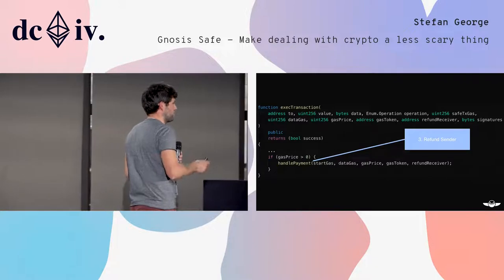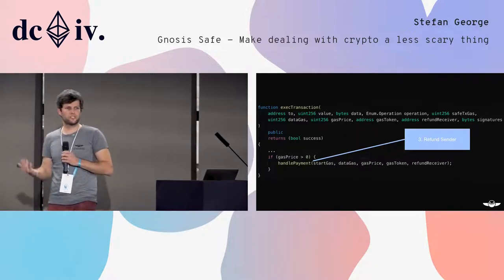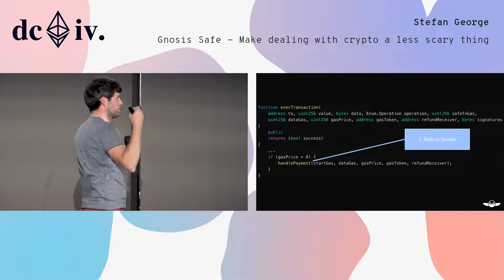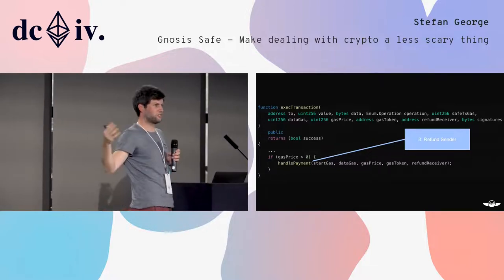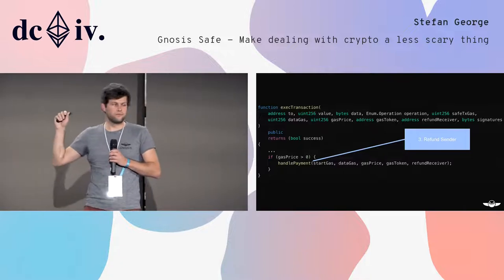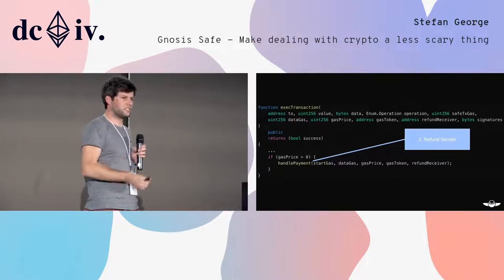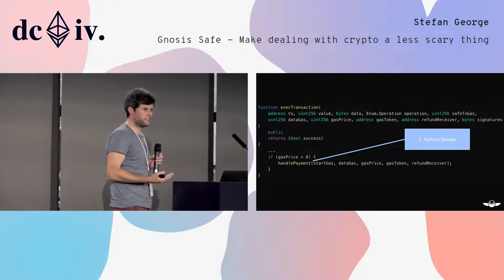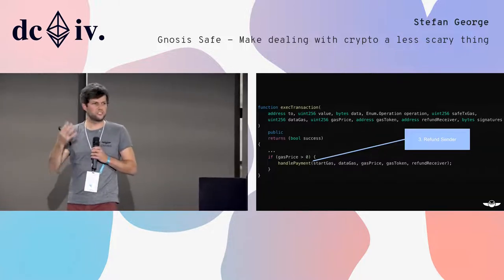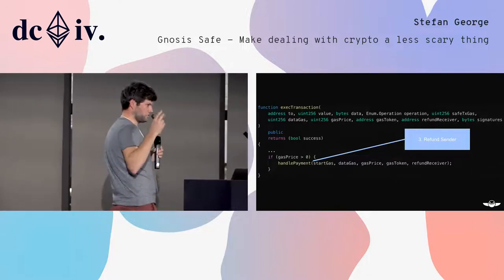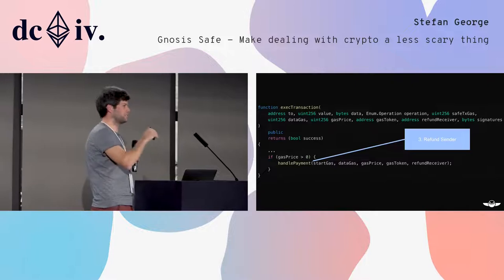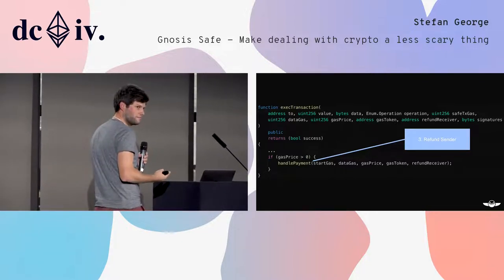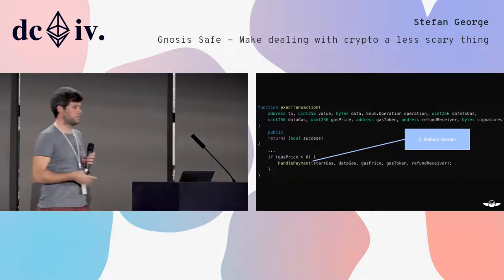Previously, when you had a multi-sig contract and owners had to sign and confirm transactions, they all had to be funded with Ether. Now, because we have meta transactions, you just collect those signed messages. But you still had to sign the Ethereum transaction, which has to be signed by an account that holds Ether in order to incentivize miners to actually mine the transaction.